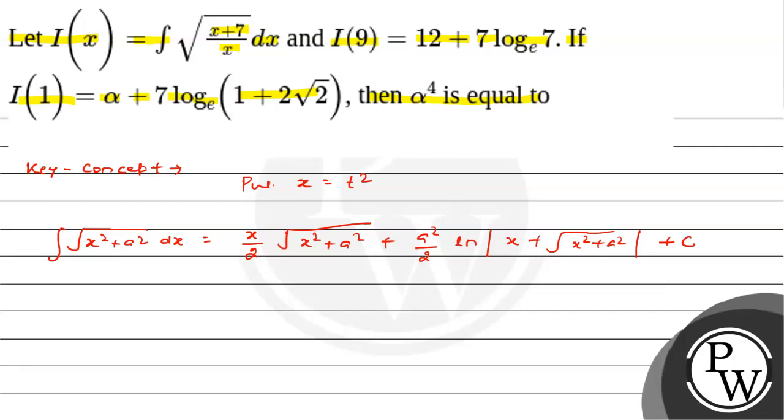Using this concept we will solve the problem. We have I(x) as the integral of (x + 7)/√x dx. Let us make it in simple form. Put x equal t², and dx becomes 2t dt.